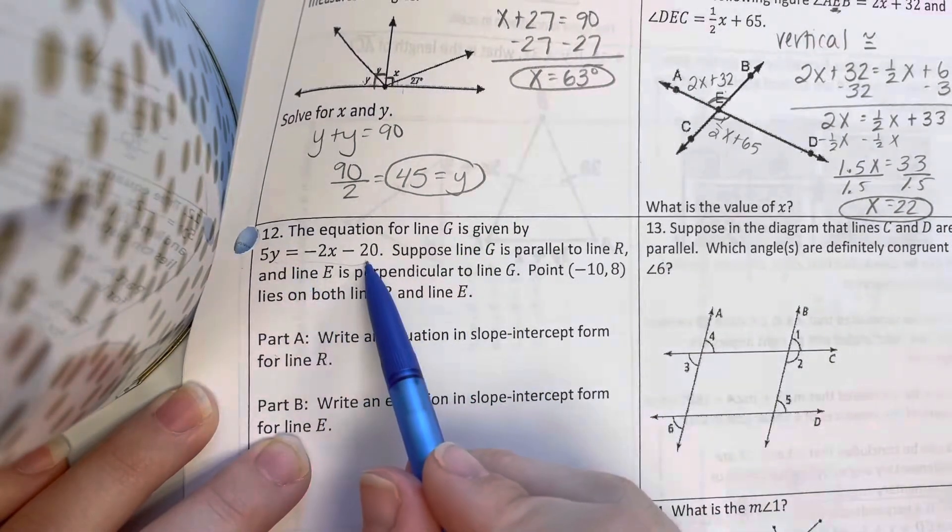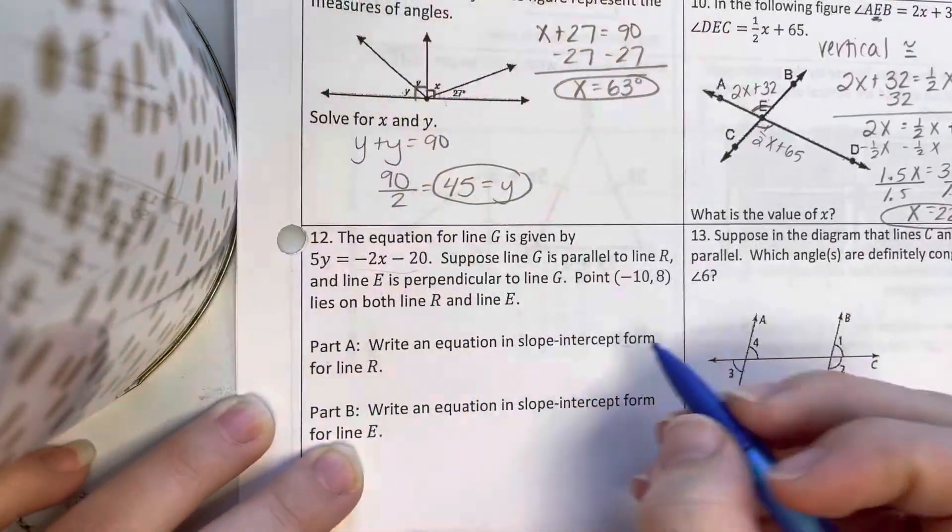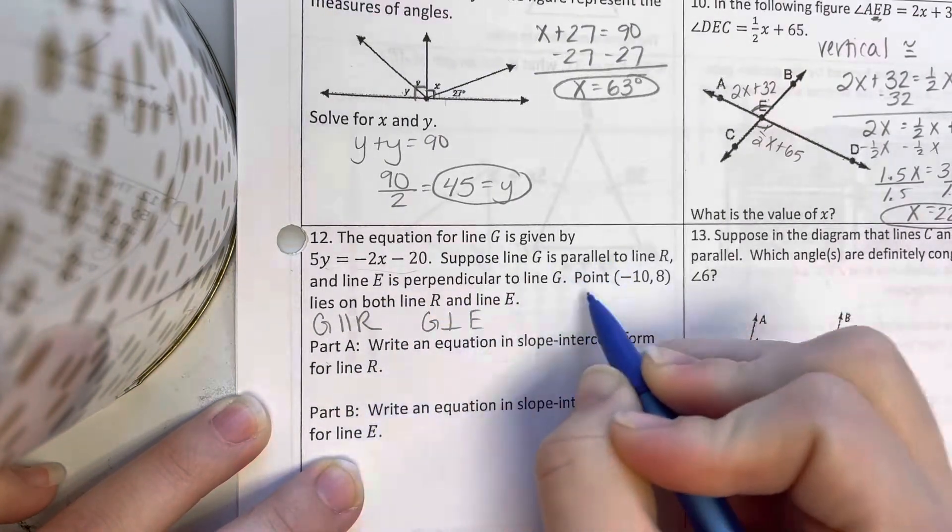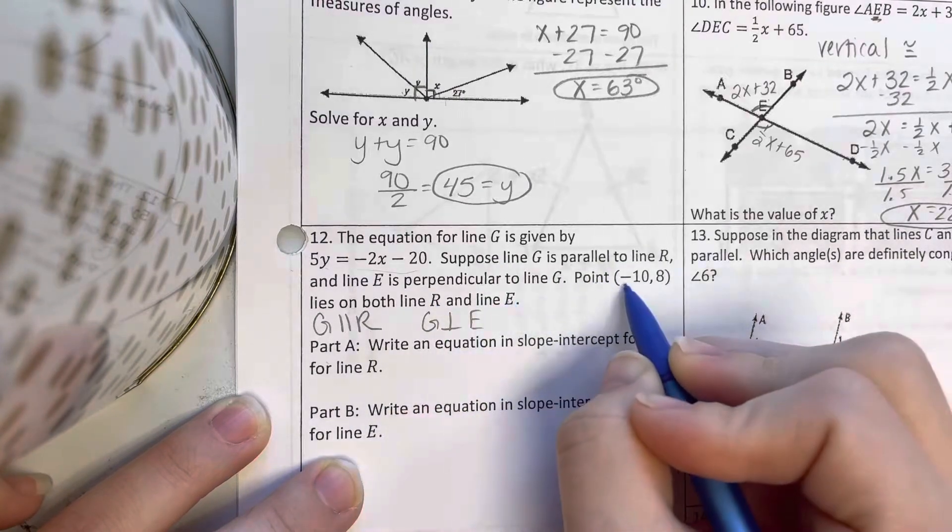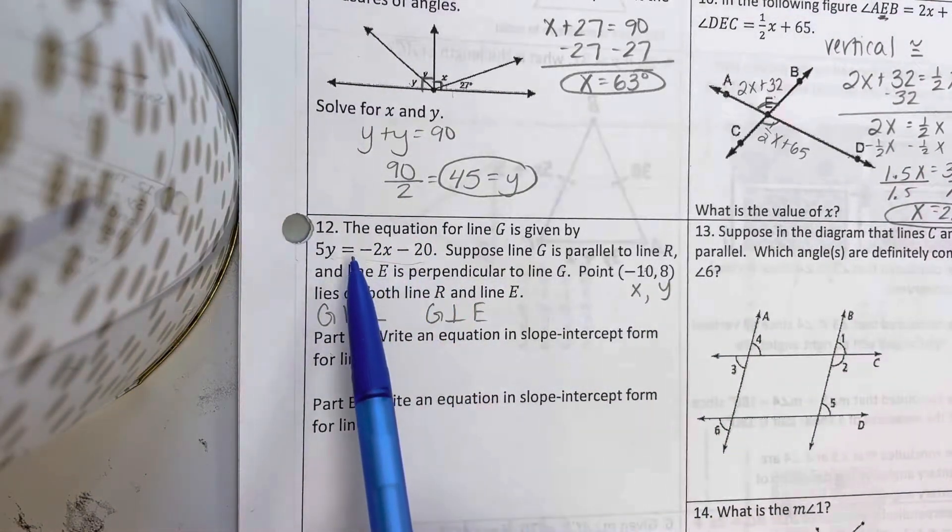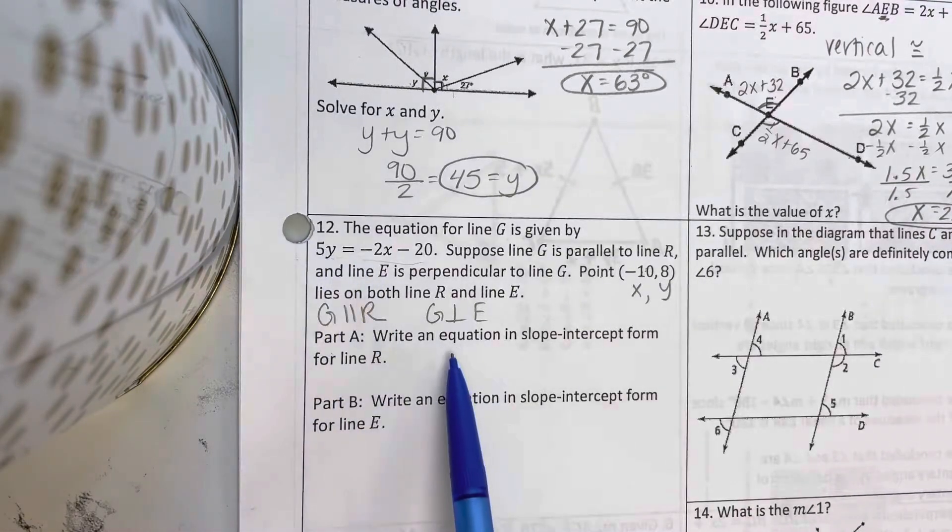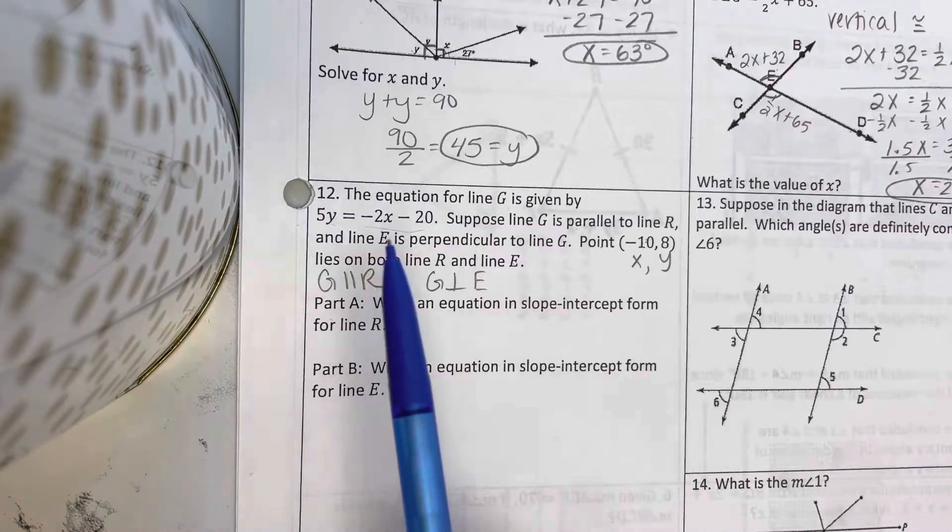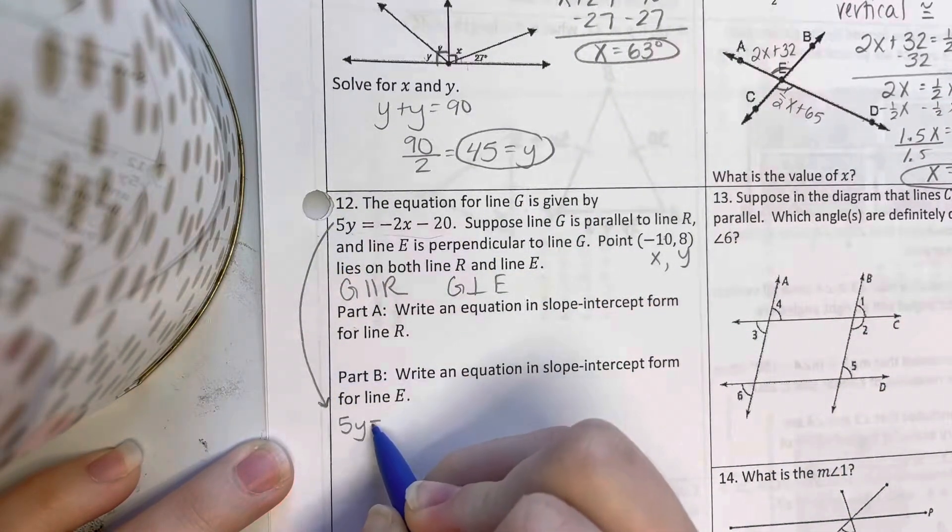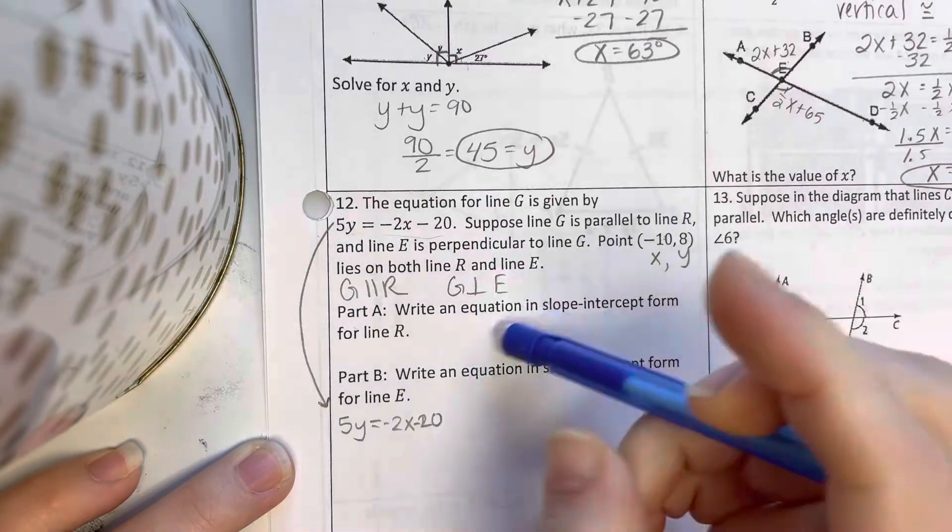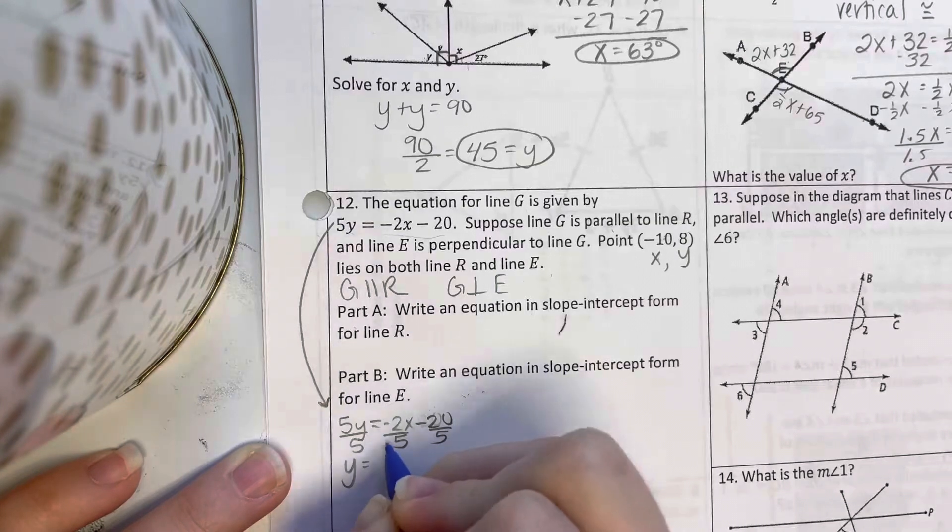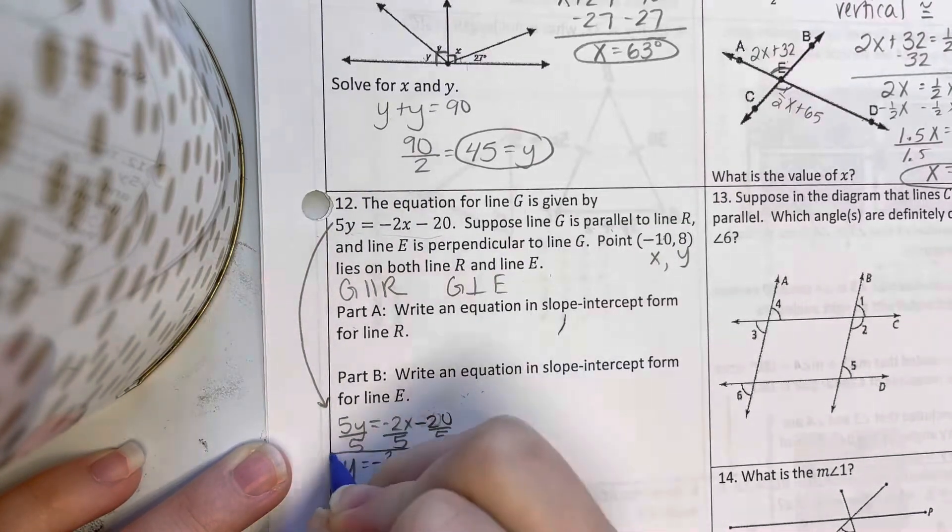The equation for line G is given here. Suppose G is parallel to R. So I know that G is parallel to R and it's perpendicular to E. And they both, line R and E, both have this point, which is X comma Y. So my original line G, I need to solve to get Y by itself so I can figure out the slope. So in order to write an equation that's for R and E, I need to know the slope of the original line here. So I've got 5Y equals negative 2X minus 20. I'm going to divide everything by 5. So Y equals negative 2 over 5X minus 4. This is line G.